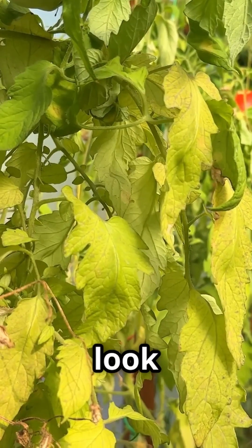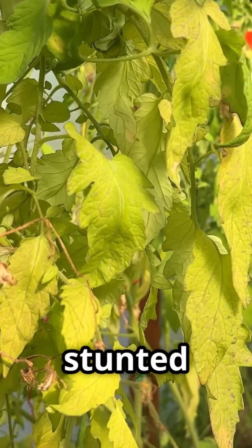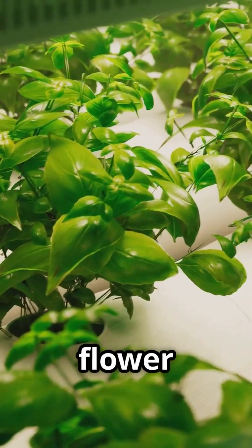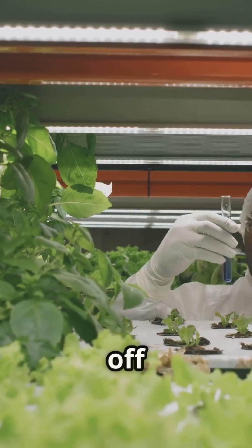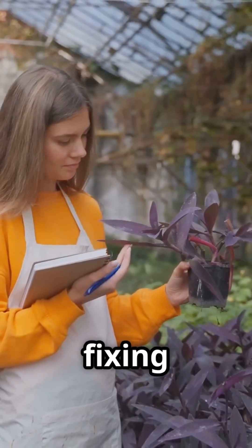First, let's look at some common signs of nutrient deficiencies in hydroponic plants. Yellowing leaves, stunted growth, and poor fruit or flower production can all indicate that something is off with your nutrient solution. But don't worry, identifying the problem is the first step to fixing it.